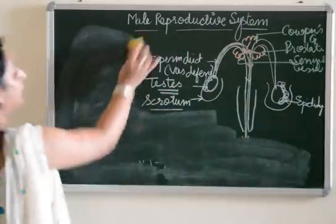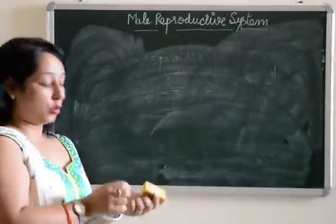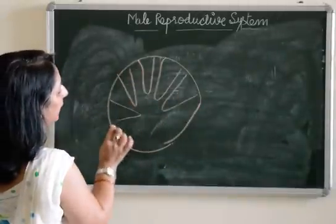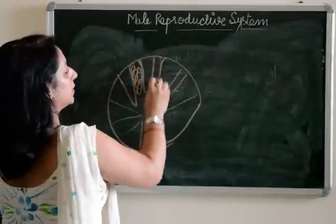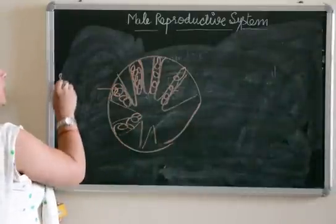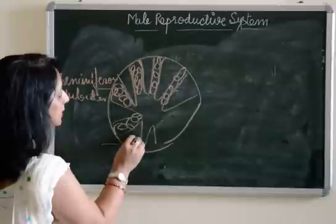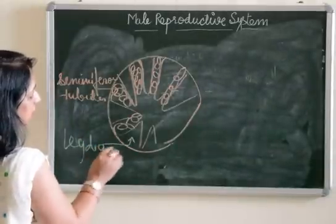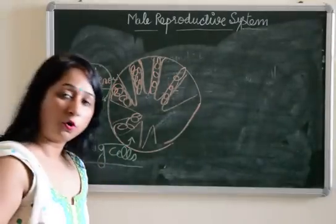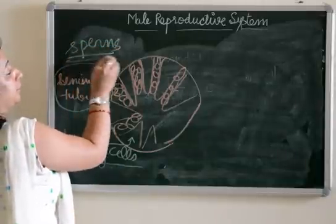The structure of testes comes as a separate exam question too. When we see the structure of testes in a magnified view, we observe that it has coiled structures present inside, and packing material between them. These coiled tubes are known as seminiferous tubules, and the packing material is known as Leydig cells, also called interstitial cells. The function of seminiferous tubules is to form sperms.